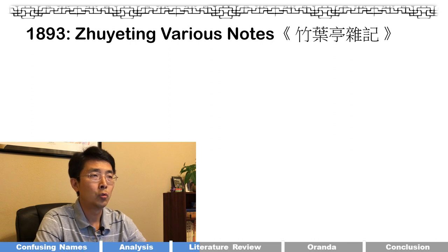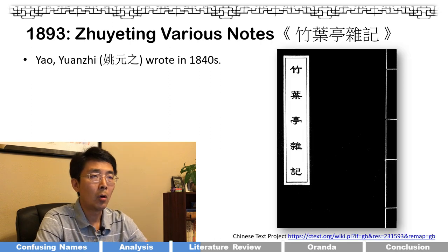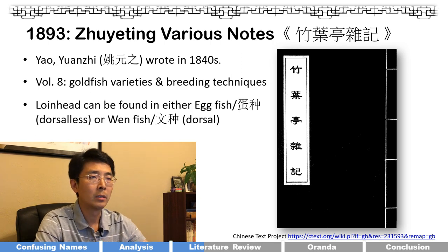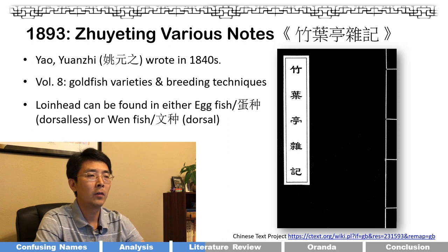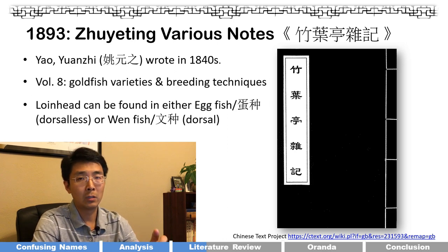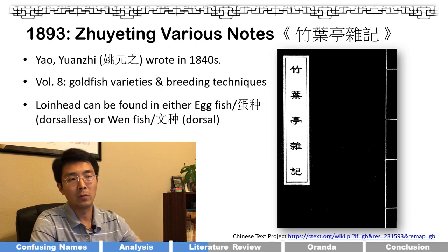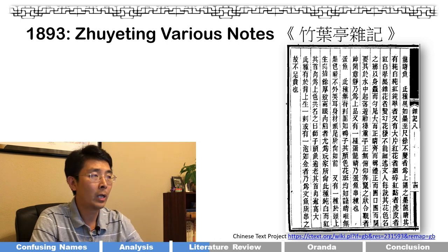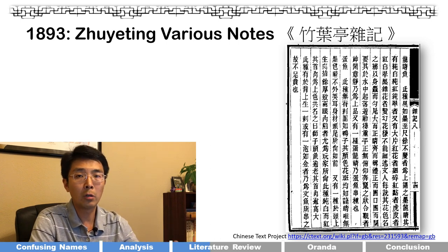Now let's go to China. In 1893, there is a book called 'Julietting Zaji' (Various Notes), written by Yao Yanzhi back in the 1840s. It's eight volumes; volume eight covers goldfish varieties in detail and also lists detailed breeding and keeping techniques. In summary, according to this book, lionhead could be found either in egg fish (danzhu in Chinese, no dorsal fin) or in 'wen fish' — which in Chinese means 'wenzhong,' referring to goldfish with a dorsal fin.